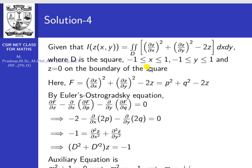The Euler–Ostrogradski equation for this problem with more than one independent variable is: ∂F/∂z − ∂/∂x(∂F/∂p) − ∂/∂y(∂F/∂q) = 0. Here ∂F/∂z = −2, ∂F/∂p = 2p, and ∂F/∂q = 2q. So we get: −2 − ∂/∂x(2p) − ∂/∂y(2q) = 0.